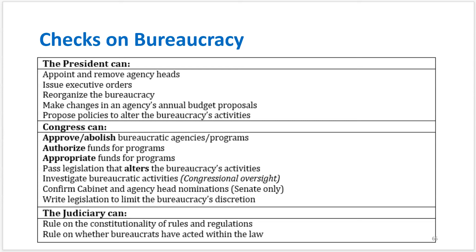The judiciary also has checks on the bureaucracy — they can determine whether something is constitutional or unconstitutional in terms of rules or regulations the bureaucracy carries out. Courts have stepped in and said bureaucrats went too far, declaring actions unconstitutional. That is a check on the bureaucracy as well and gets the bureaucracy to pay attention to whether they are going beyond where they should be.